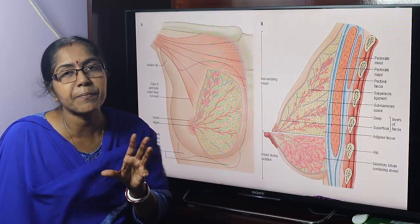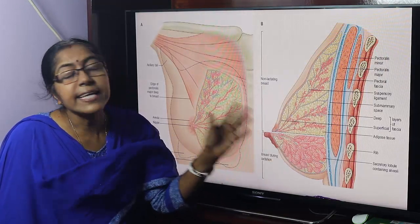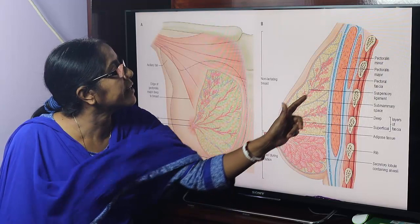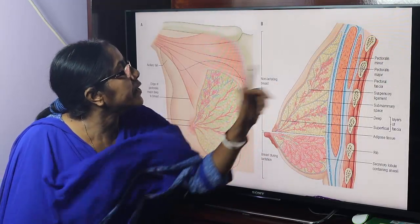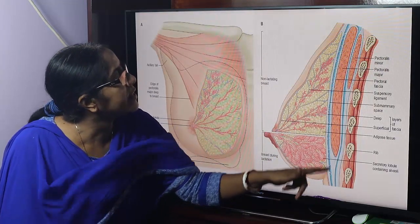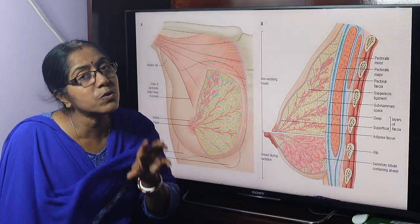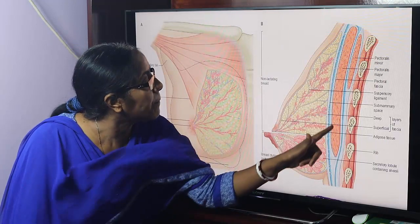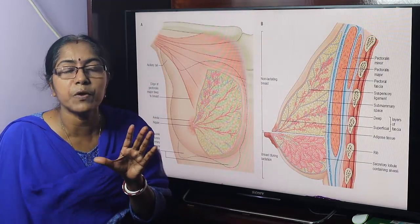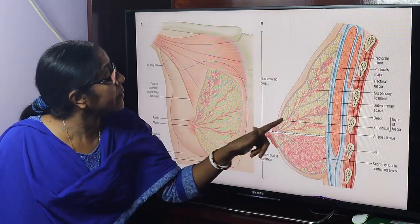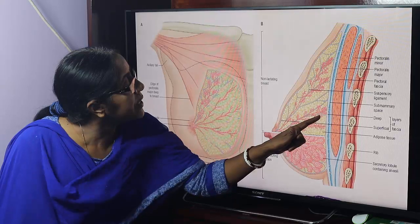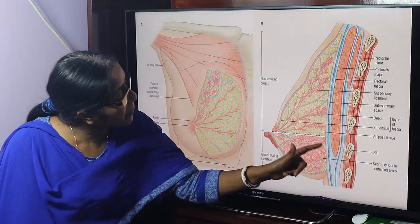In immature female and male, the breast is rudimentary. Before puberty, there is only the duct system — the lactiferous ducts — and the suspensory ligament of Cooper, which anchors the glandular tissue with the overlying skin and underlying deep fascia. At the onset of puberty, due to the influence of growth hormone, estrogen, and progesterone, the duct system branches and shows solid outgrowths, which are the precursors of the alveoli.